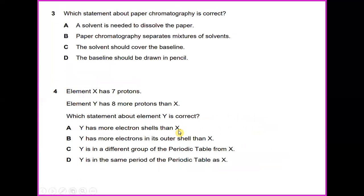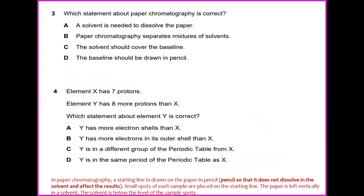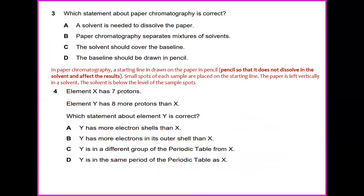Which statement about paper chromatography is correct? In paper chromatography, a baseline is drawn on the paper in pencil so that it does not dissolve in solvent and affect the results. Small spots of each sample are placed on the baseline. The paper is left vertically in a solvent. The solvent is below the level of the sample spot. So the answer for this would be the baseline should be drawn in pencil.